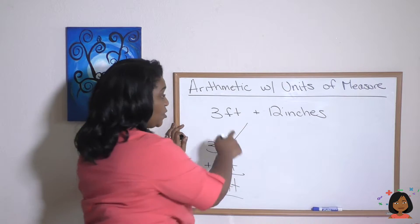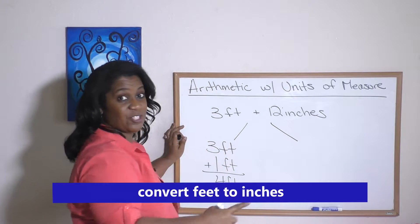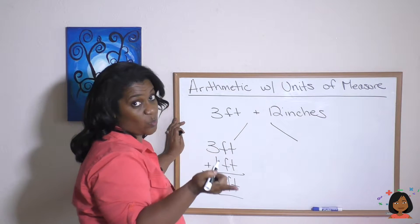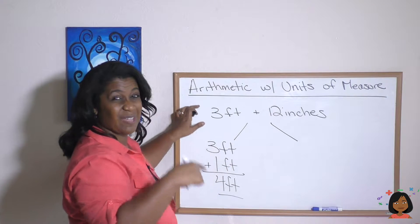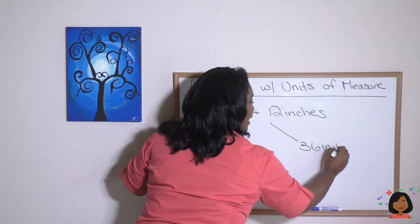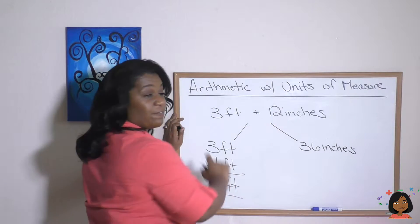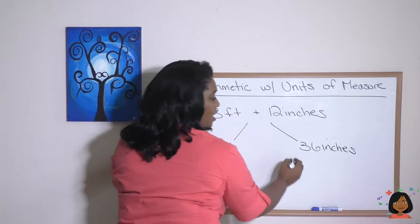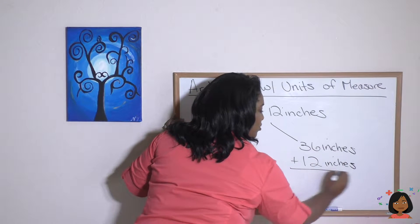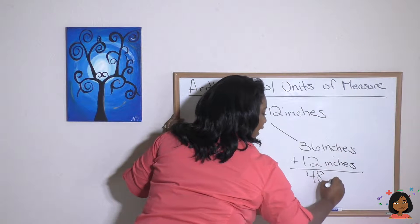The other way we could do it, we could convert everything to inches. So here we have three feet. Well, we know 12 inches equals one foot. So 12 times three, 36 inches. That's the same thing as saying three feet plus our 12 inches over here. And now we can just add, we get 48 inches.